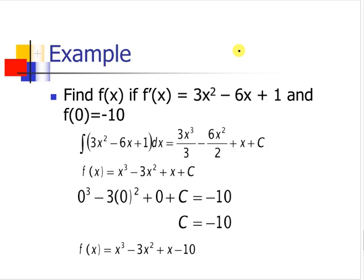Here we have our problem: find f, the original function, if we know the derivative f' equals 3x squared minus 6x plus 1. We're also given that on the original function, f(0) equals negative 10. So we have to remember that when we integrate a derivative, what we are finding, its antiderivative, is the original function.